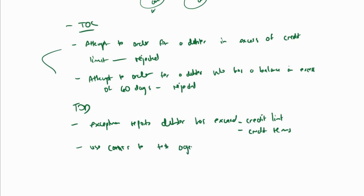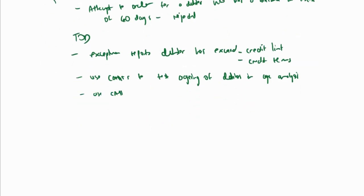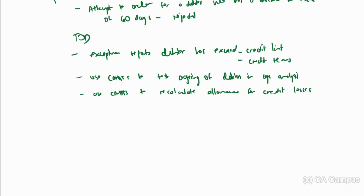Other than that, I can use CATS to test the aging of debtors in the age analysis and to recalculate the allowance for credit losses. For non-CATS related procedures, because there is an estimate here, I would still normally go and find out what the accounting policy is, test whether it's reasonable by comparing it to the market, test whether it's consistent by comparing to the prior year, and then select a sample using CATS of debtors in different aging categories.